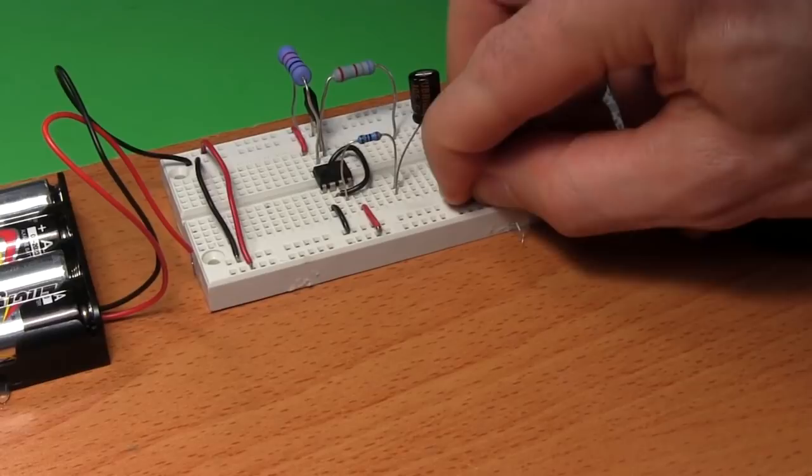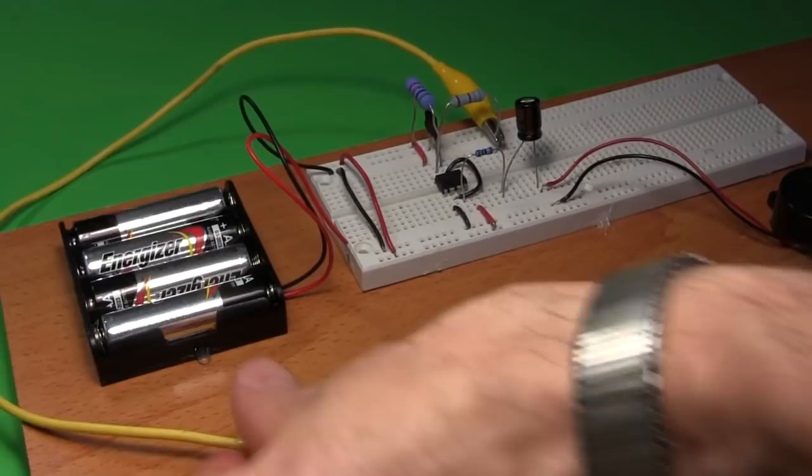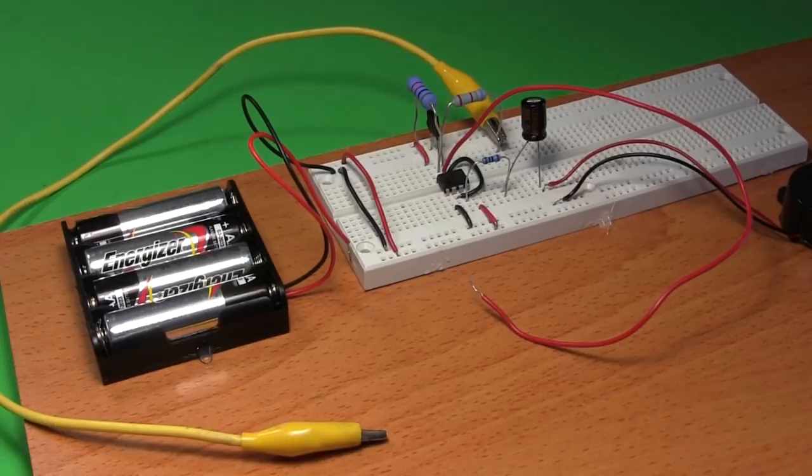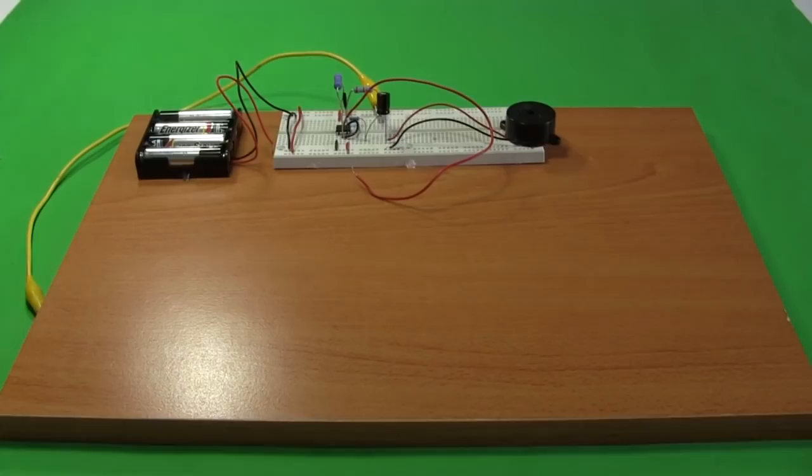Next, take the wire with the alligator clips on it, and clip one end to this leg of the 6.8 kohm resistor. Don't worry about the other end of the wire for now. And lastly, get a long wire, around one foot long, and plug one end here, in the row for pin seven. Don't do anything with the other end for now.